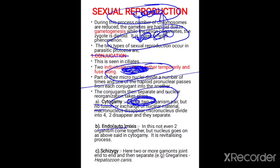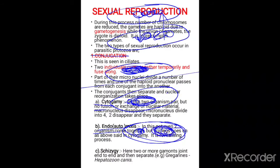When it comes to endomixis, not even two organisms come together. In endomixis there is no pairing of protozoans, but in the individual protozoan the macronucleus disappears and the micronucleus divides to form pronuclei, and those formed pronuclei fuse to form the nucleus. This majorly helps in the revitalizing process, meaning the reorganization of the nuclear material in the individual protozoan.